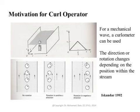We use a device called the curlometer. The curlometer has four feathers normal to each other, connected via a tiny rod to a floating ball with a black dot on its side. This mechanical curlometer measures the curl of mechanical waves.